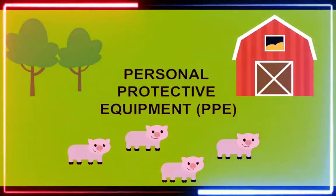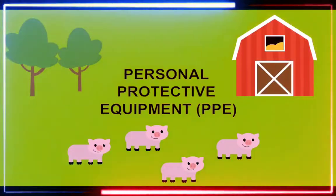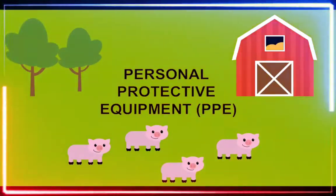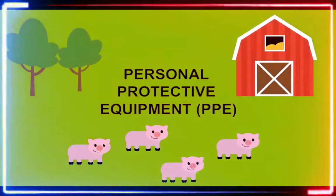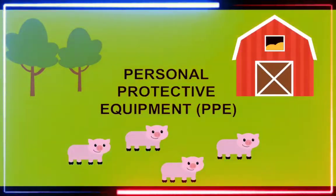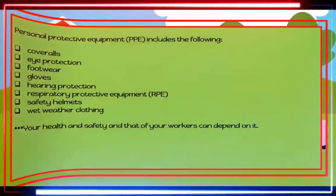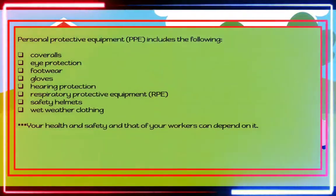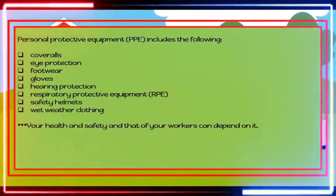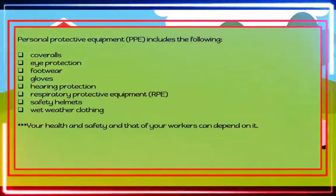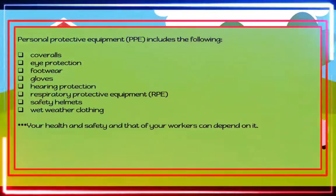Personal Protective Equipment (PPE): The law requires that personal protective equipment be provided for use at work, must meet an appropriate standard, and must be CE marked. PPE includes: coveralls, eye protection, footwear, gloves, hearing protection, respiratory protective equipment (RPE), and safety helmets.